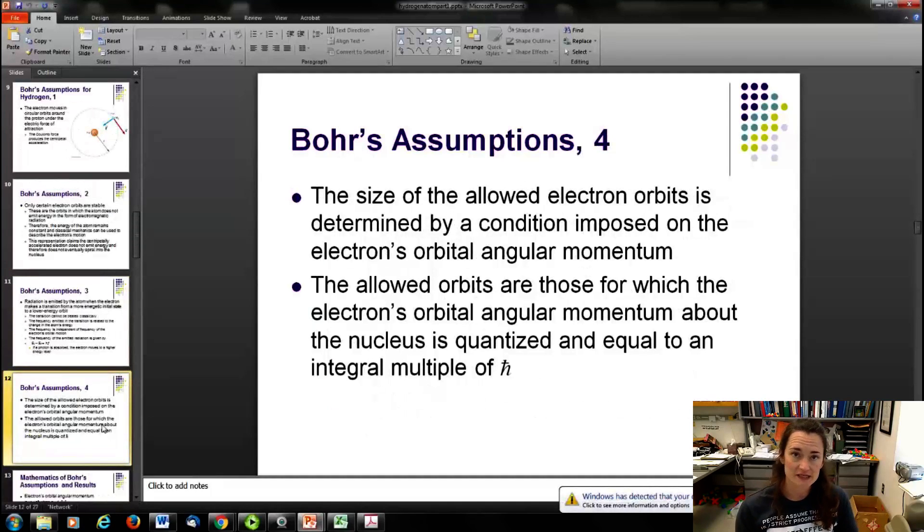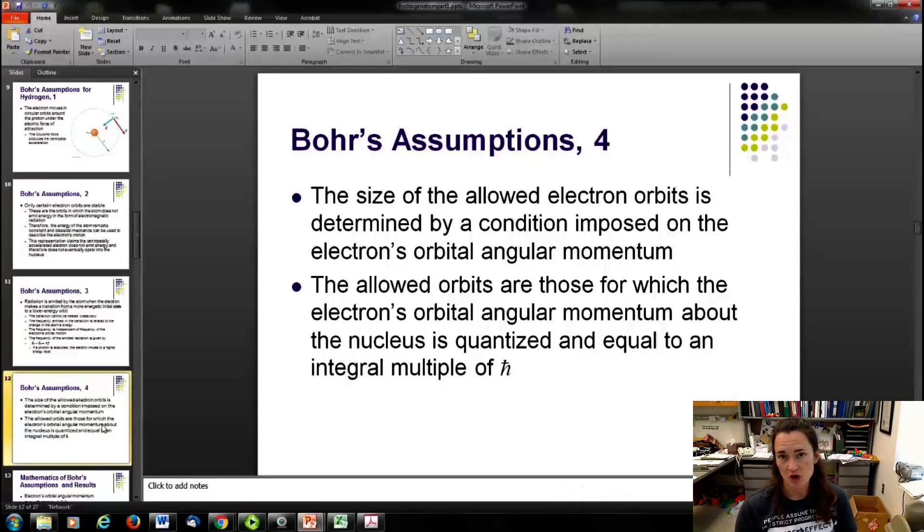He didn't have a full explanation for why these things weren't radiating, but he did know that there were certain orbits of the electron that were special. He decided that probably it had something to do with a condition imposed on the electron's orbital angular momentum. He got this wrong. I just want to go ahead and emphasize this is an incorrect statement. But at the time his hypothesis was if it's an integer multiple of h-bar, Planck's constant divided by 2 pi, then that would be the angular momentum that is allowed.